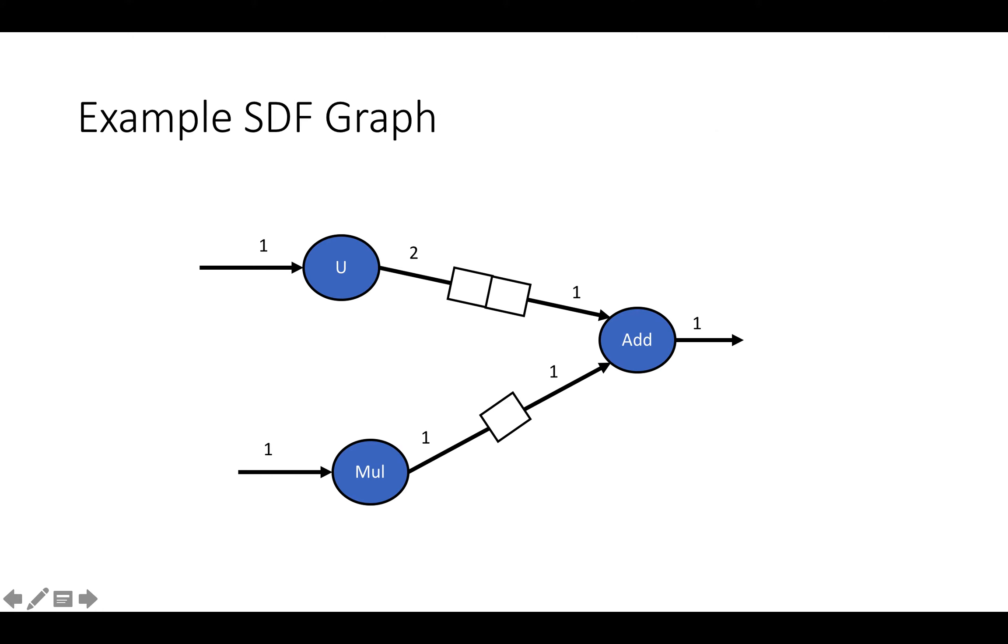So just as an example of how SDF works, and we'll get into how we can model loop nests as SDF later, suppose we have three operations in our SDF graph. We have an input to an upsample, which I've labeled as U. An upsample takes in one piece of data on each firing and produces two pieces of data on each firing.